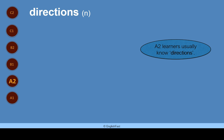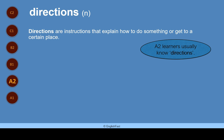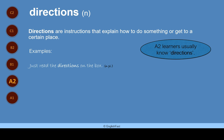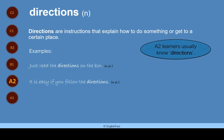Directions. Directions is a noun. A2 learners usually know directions. Directions are instructions that explain how to do something or get to a certain place. Here are some examples. Just read the directions on the box. It is easy if you follow the directions. Can you give me directions to your house?